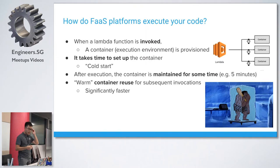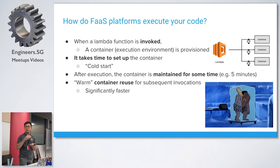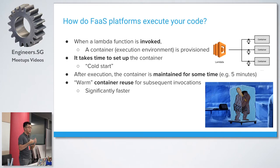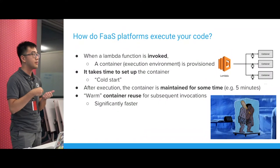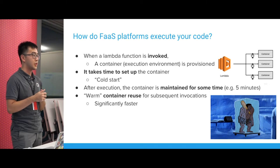Behind the scenes, when a Lambda function is invoked, a container is provisioned with some execution environment defined — a certain amount of memory and timeout, basically a set of attributes for that execution environment. It takes time to set up this container and bootstrap the whole process, and this causes something called cold start latency. On the first invocation of a function that hasn't been executed in a while, it will take a bit more time because it needs to do all this bootstrapping from scratch.